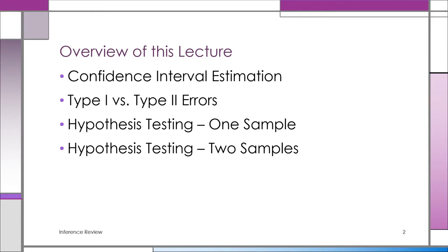The sample evidence will either consist of a sample mean x-bar, a standard deviation s, and a sample size n. Using that sample evidence, we can construct the confidence interval — and that's called estimation, or confidence interval estimation. Later on, we're going to switch over to hypothesis testing, but right now we're talking about confidence interval estimation.